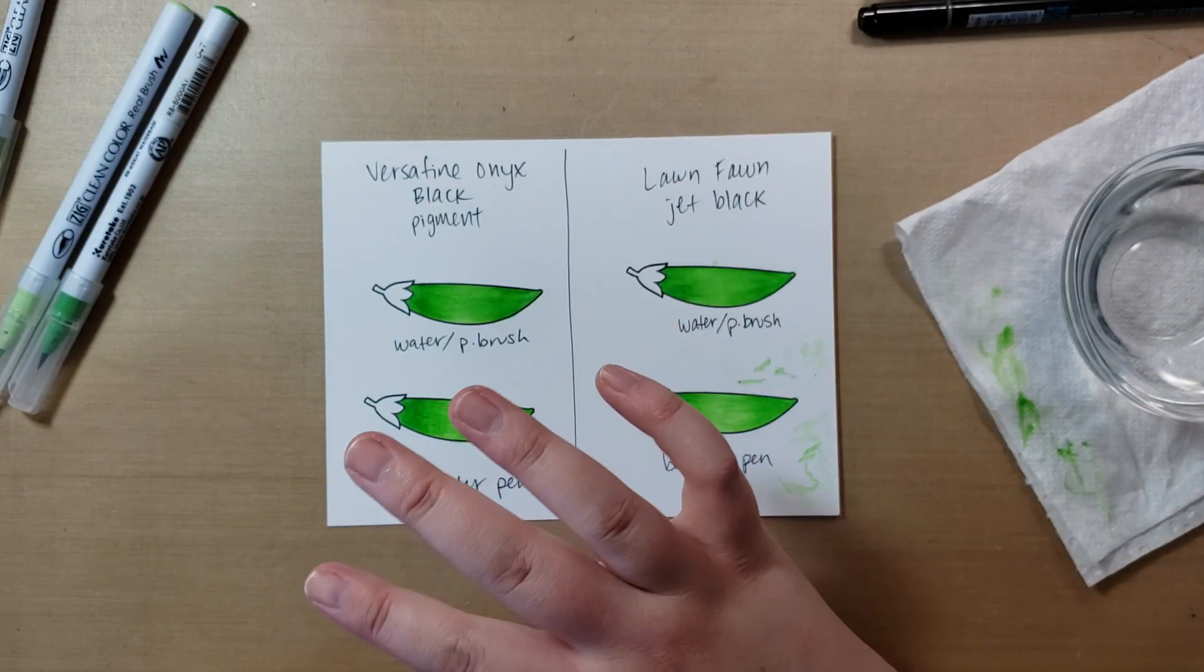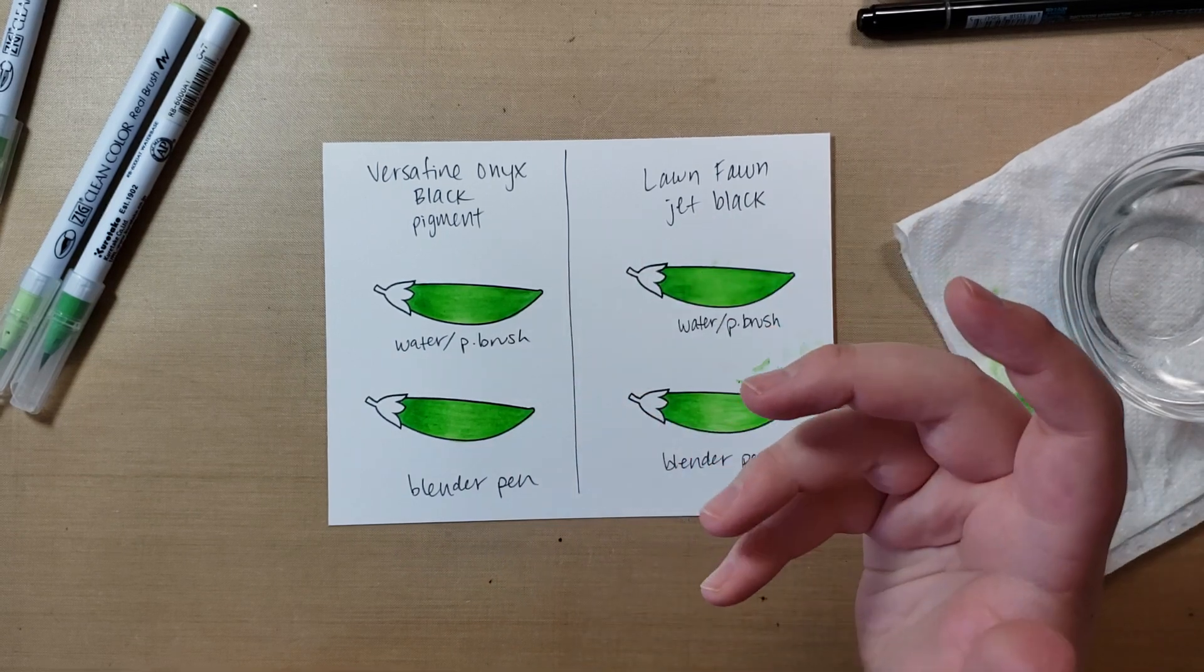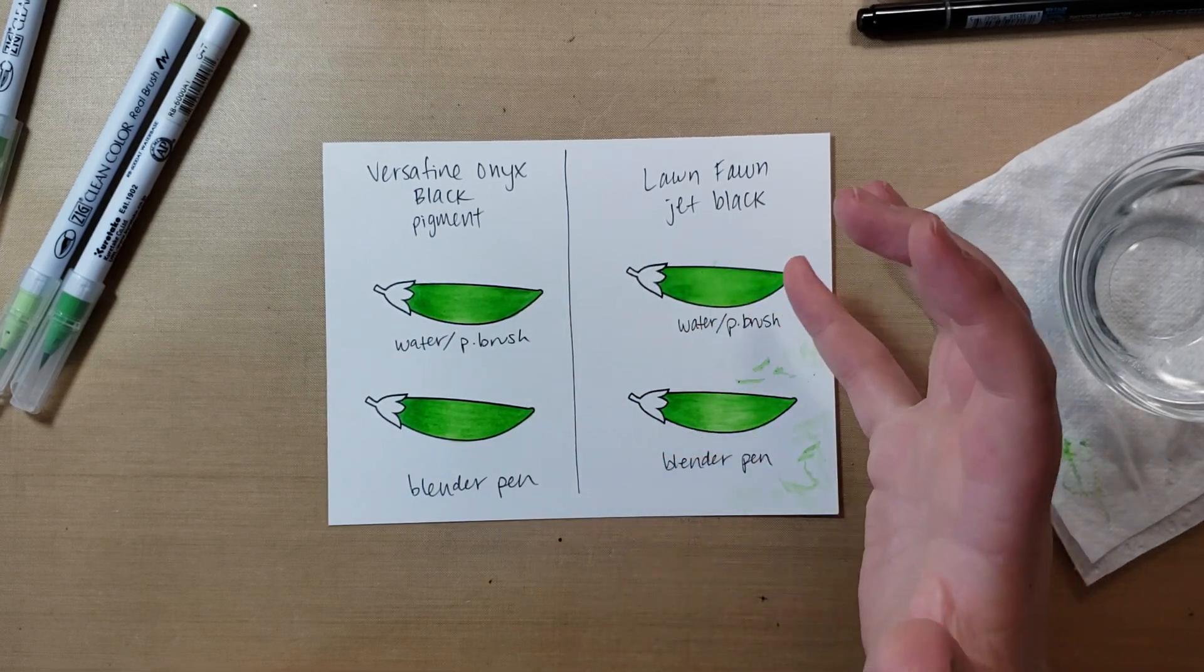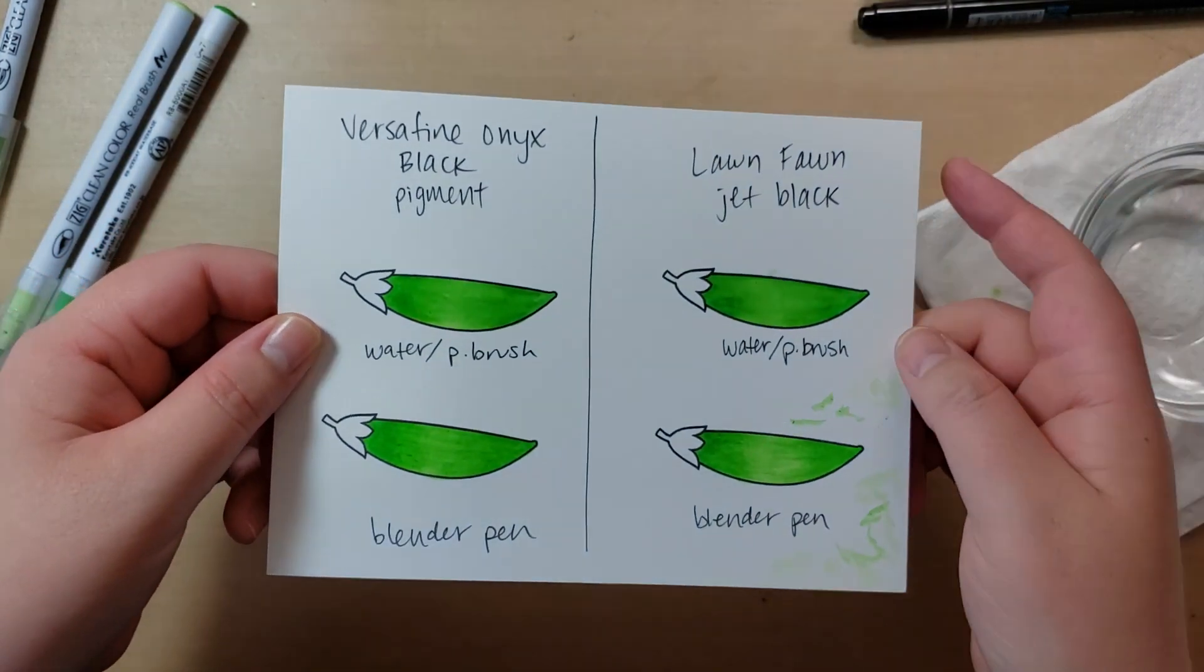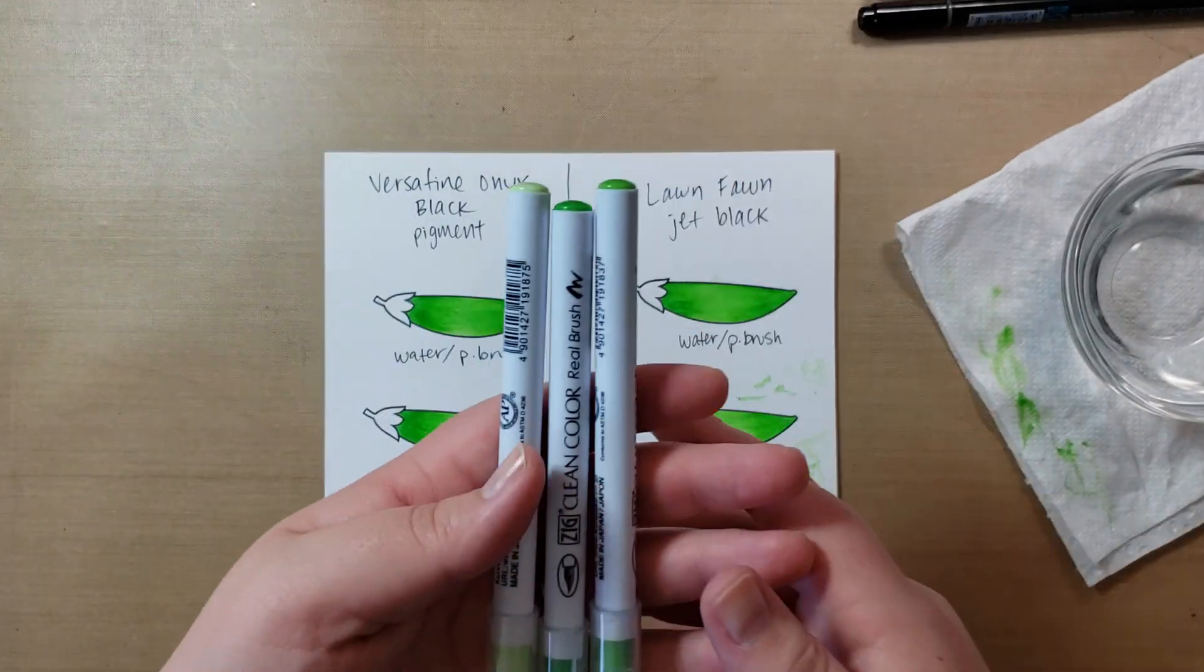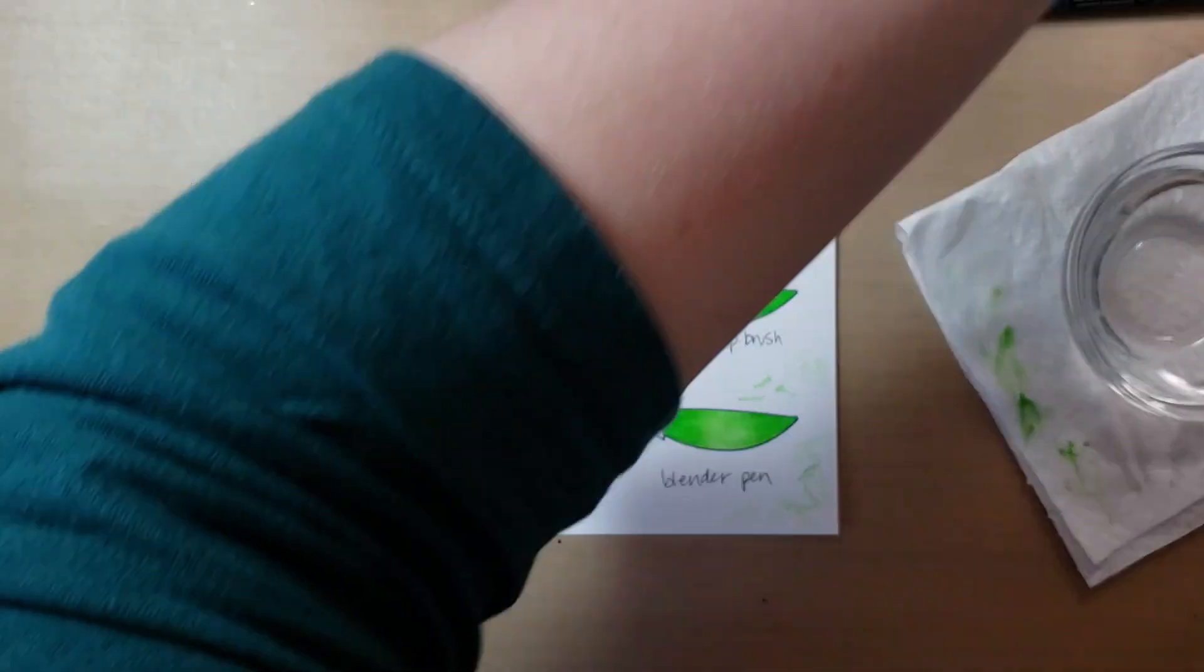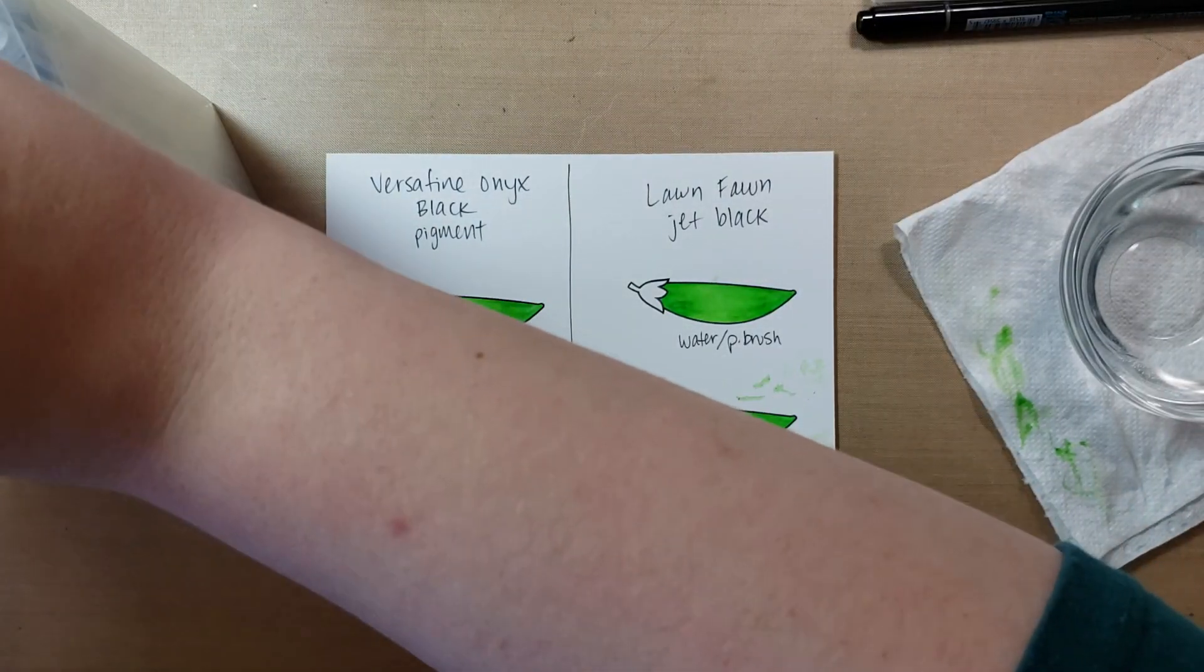I don't know if Versafine Onyx Black or Lawn Fawn on watercolor paper would necessarily be any better or maybe not pill with the blender pen. I'm just not huge on watercolor paper. So if you have any tips, feel free to let me know down below or tips for anybody else. You guys can go read in the comments.